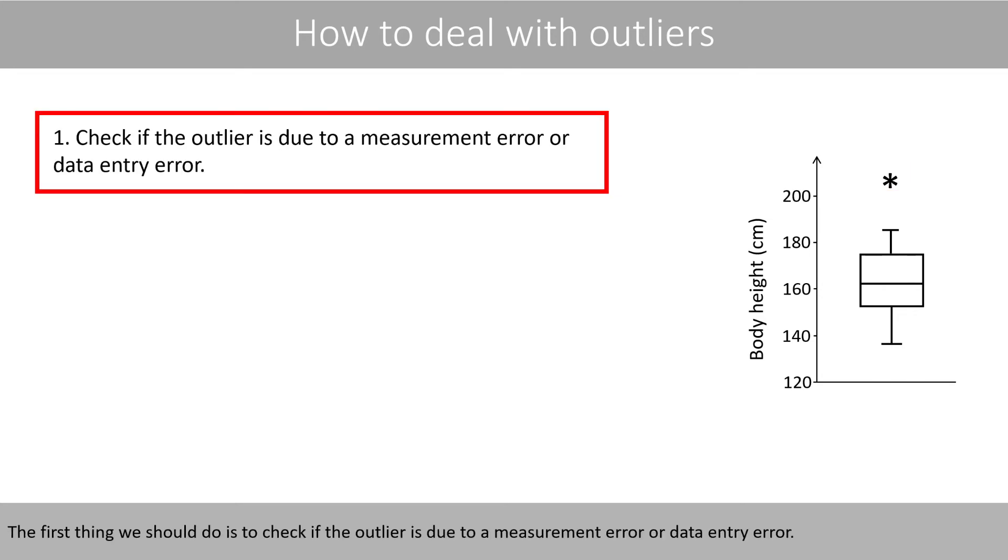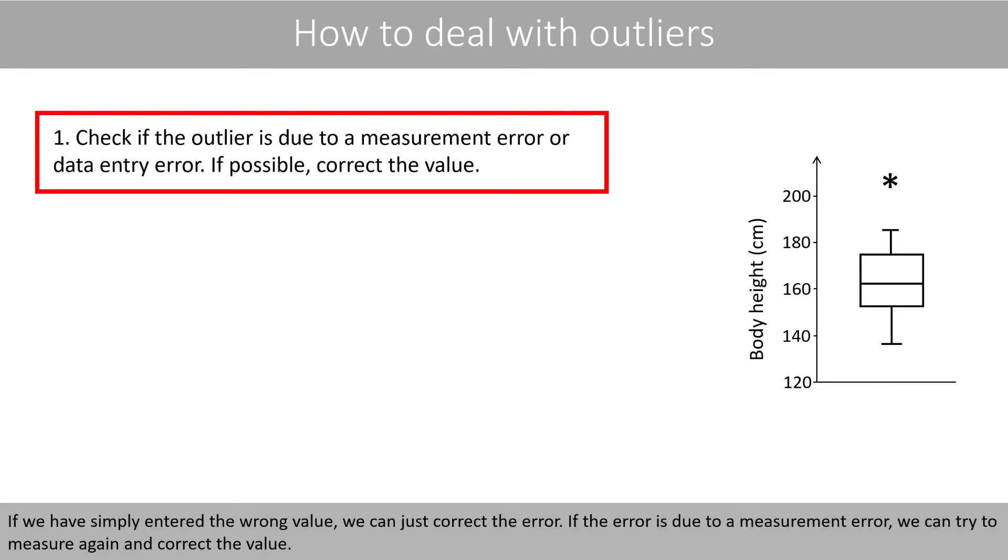The first thing that we should do is to check if the outlier is due to a measurement error or a data entry error. If we have simply entered the wrong value, we can just correct the error. If the error is due to a measurement error, we can try to measure again and correct the value.